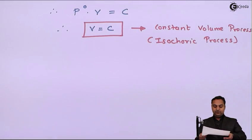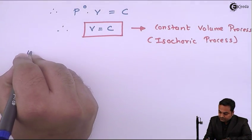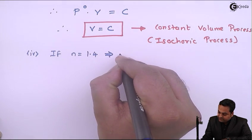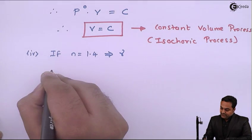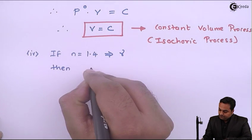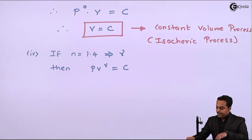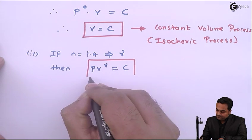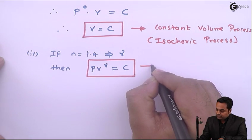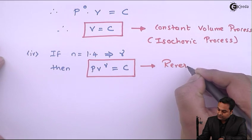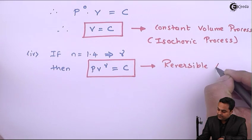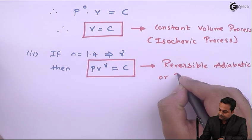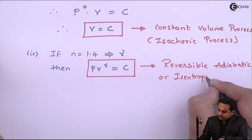Finally, if n is equal to 1.4, which is nothing but gamma, then PV raised to gamma is equal to constant. This is the governing equation for the reversible adiabatic or isentropic process.